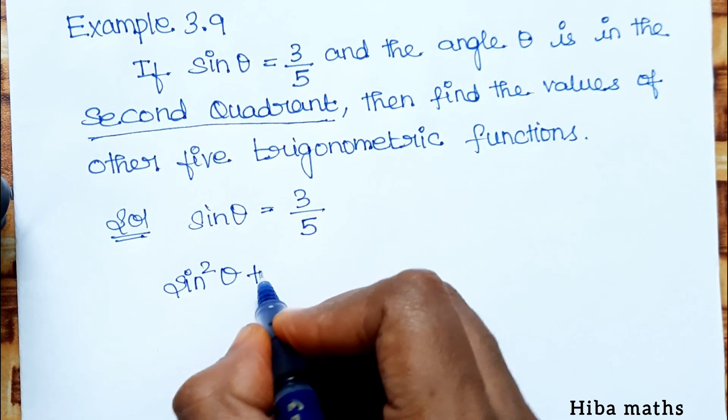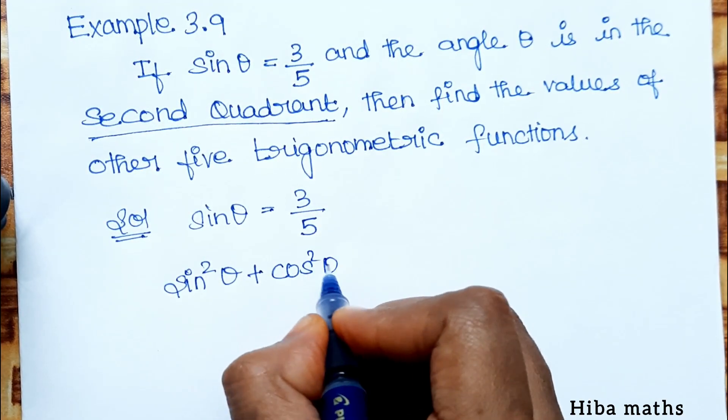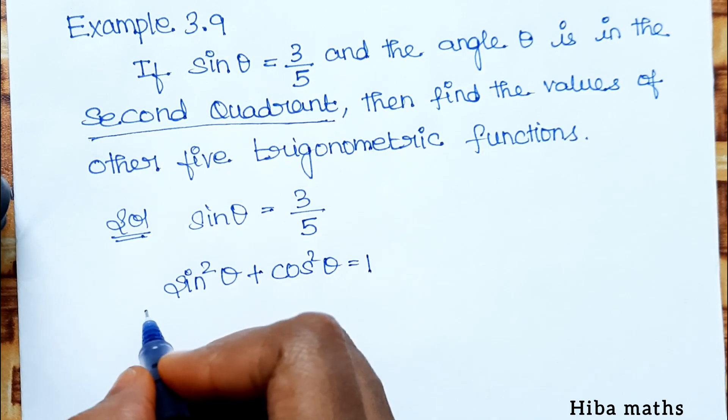So, sin²θ + cos²θ = 1. We know this identity.